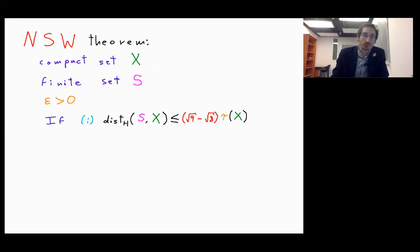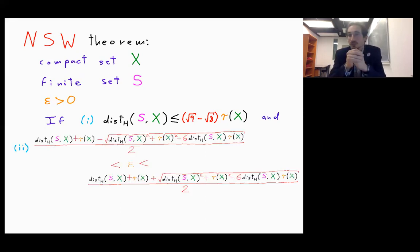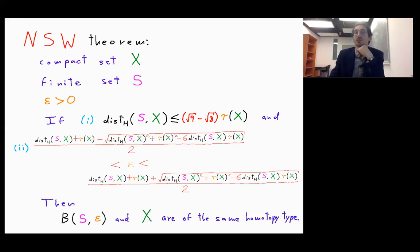And there are two conditions. The first one says the Hausdorff distance between my sample and X is small enough compared to the reach. And then a second condition saying the fattening of the points is not too small, is not too big.